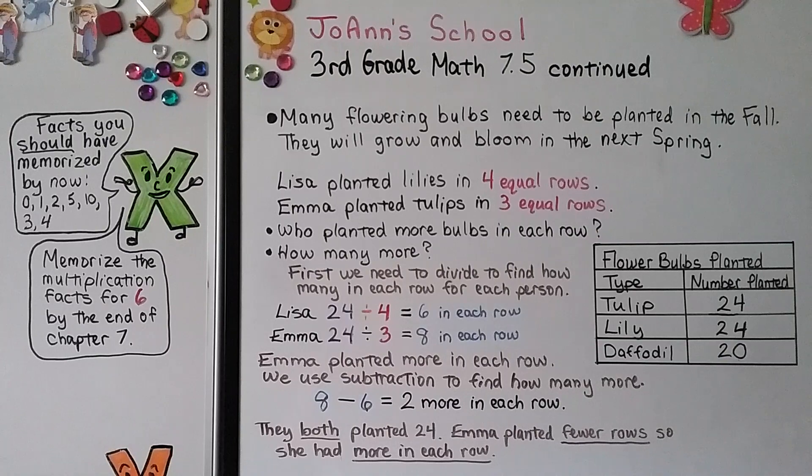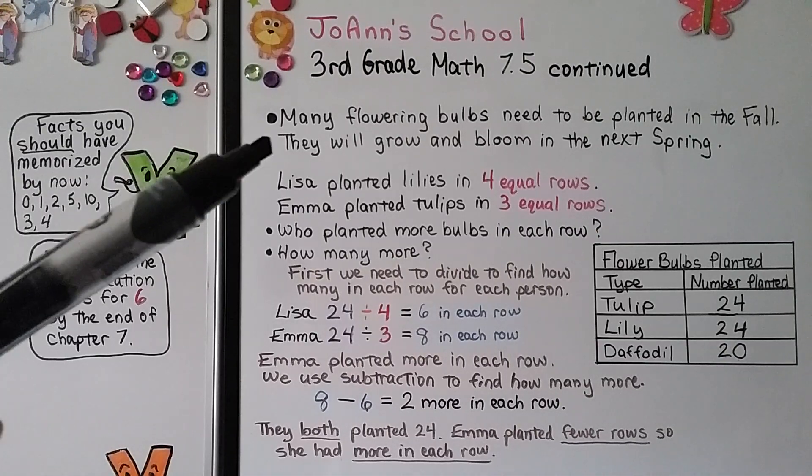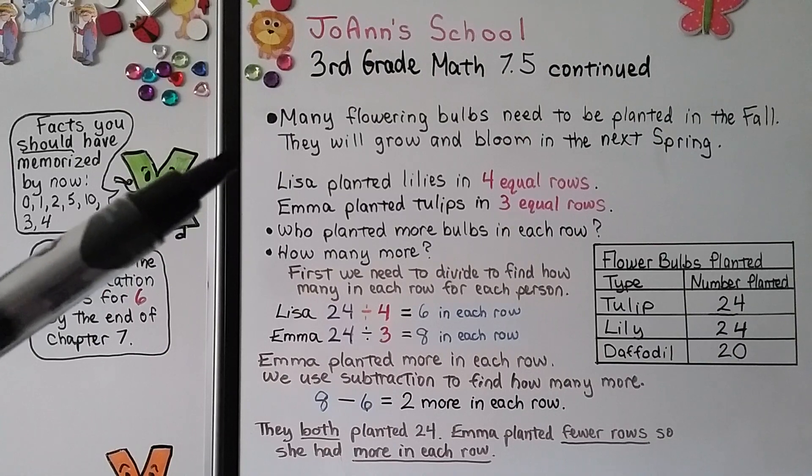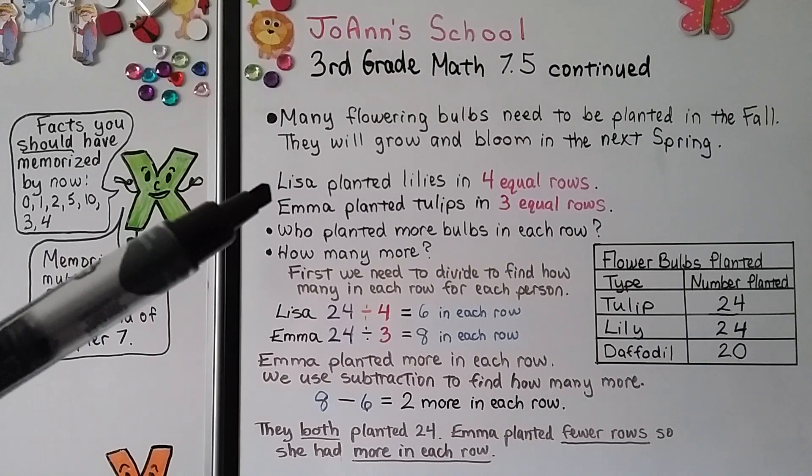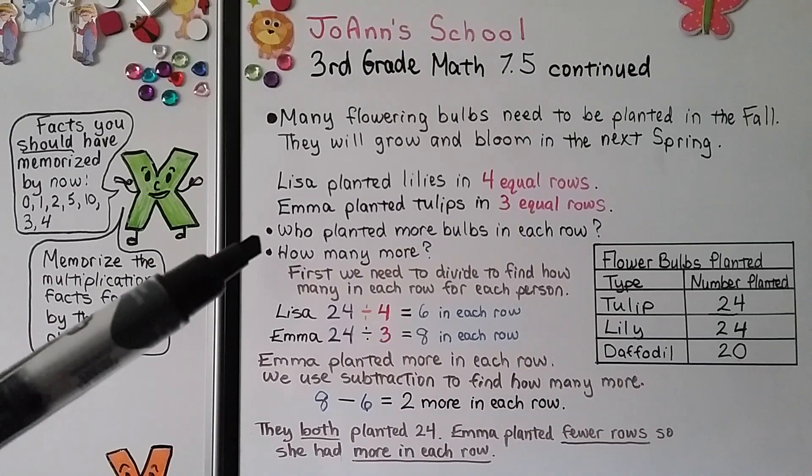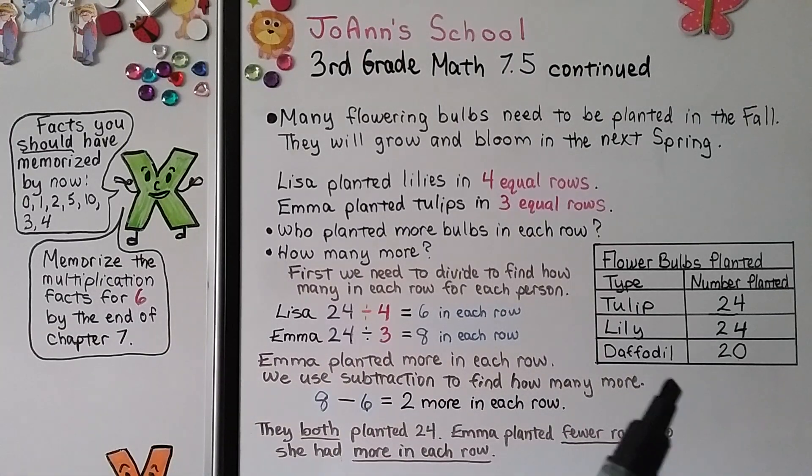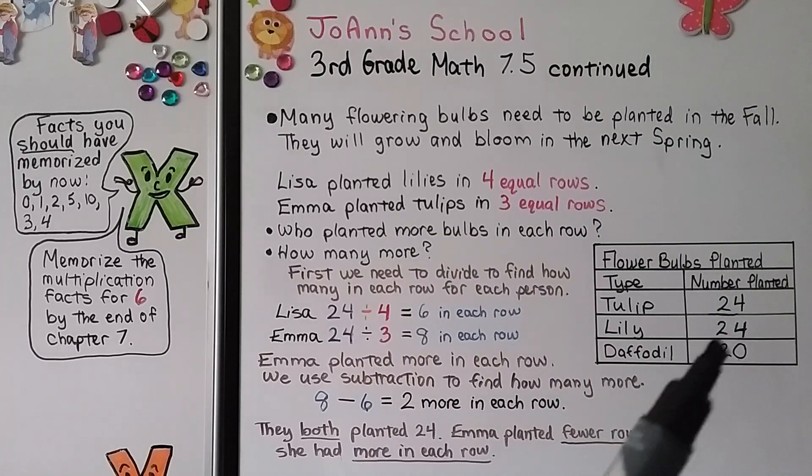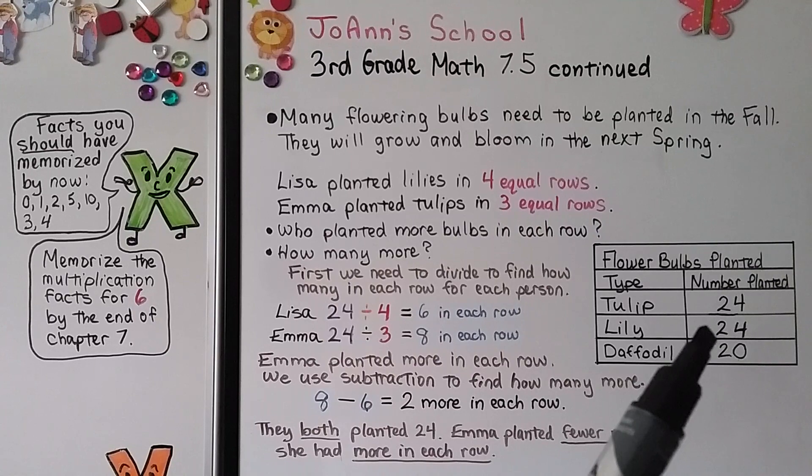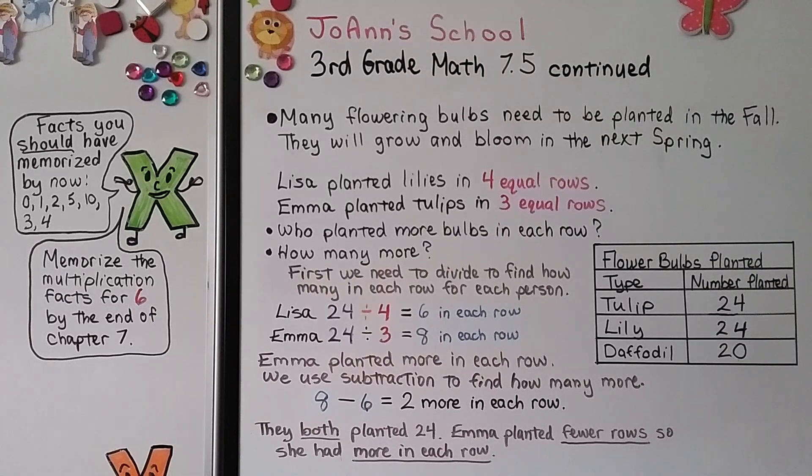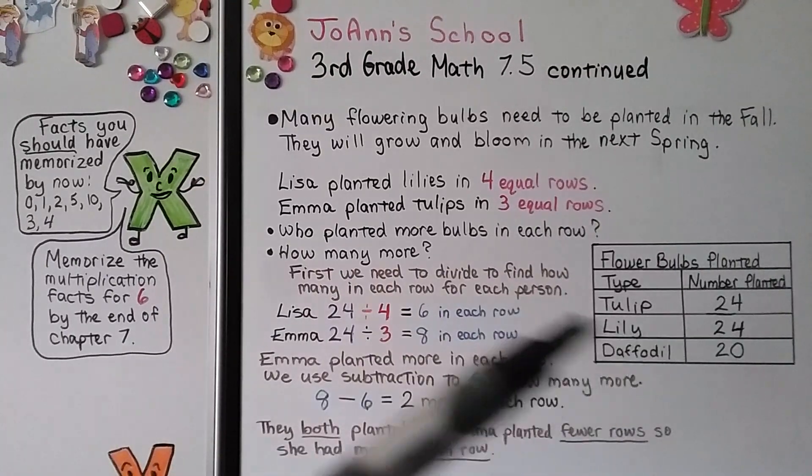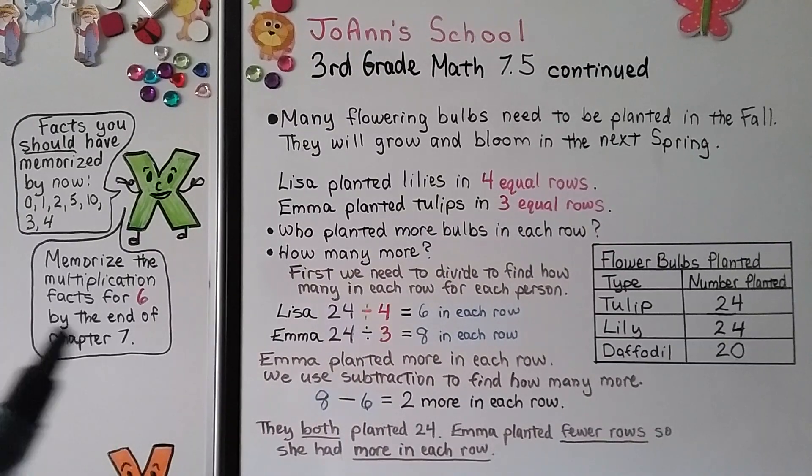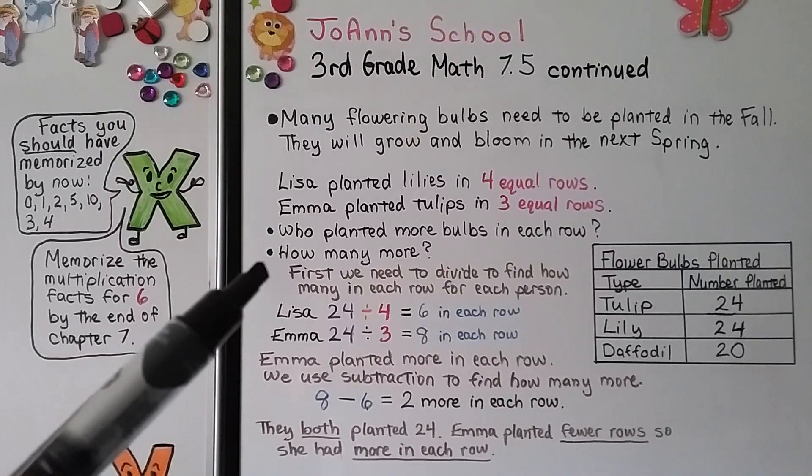Many flowering bulbs need to be planted in the fall and they'll grow and bloom in the next spring. Lisa planted lilies in 4 equal rows. Emma planted tulips in 3 equal rows. Who planted more bulbs in each row and how many more? Our frequency table shows tulips: 24 planted, lily: 24 planted, daffodils: 20 planted. Lisa planted lilies, that's 24. Emma planted tulips, that's also 24, but in a different number of equal rows.